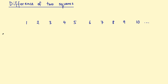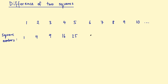Let's square these numbers. When we square a number, we multiply it by itself. So the square numbers are: 1 squared is 1, 2 squared is 4, 3 squared is 9, then 16, 25, and so on.